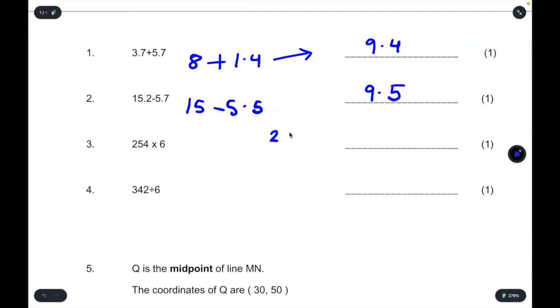Next, we've got 254 times 6. So 4 times 6 is 24. So we've got 4 extra 2. 5 times 6 is 30. Add the 2 is 32. So we've got 2 extra 3. 2 times 6 is 12. Add the 3 is 15. So we've got 1, 5, 2, 4.